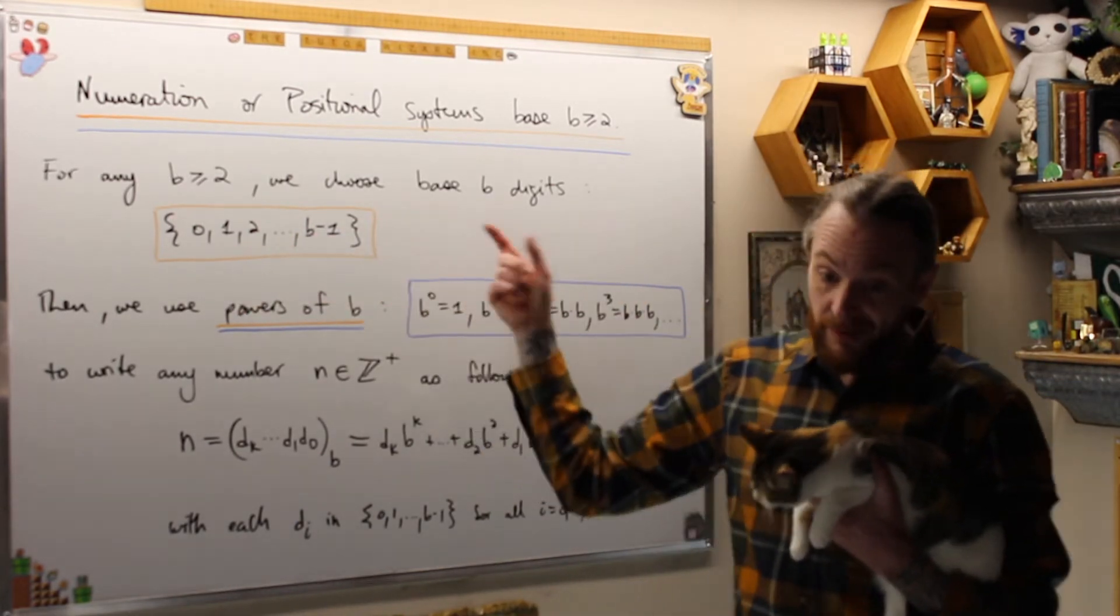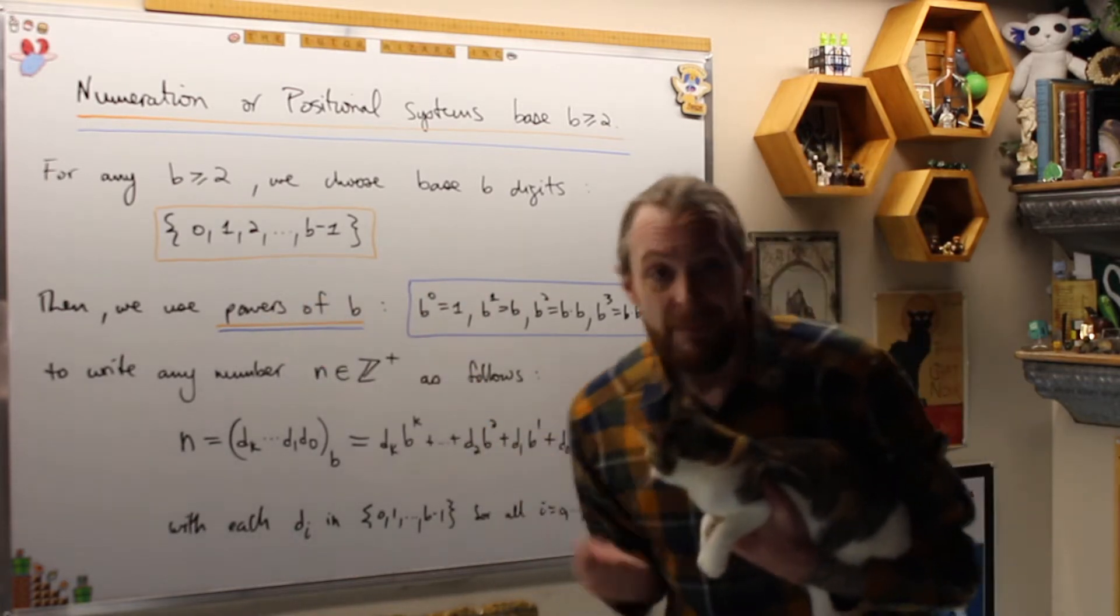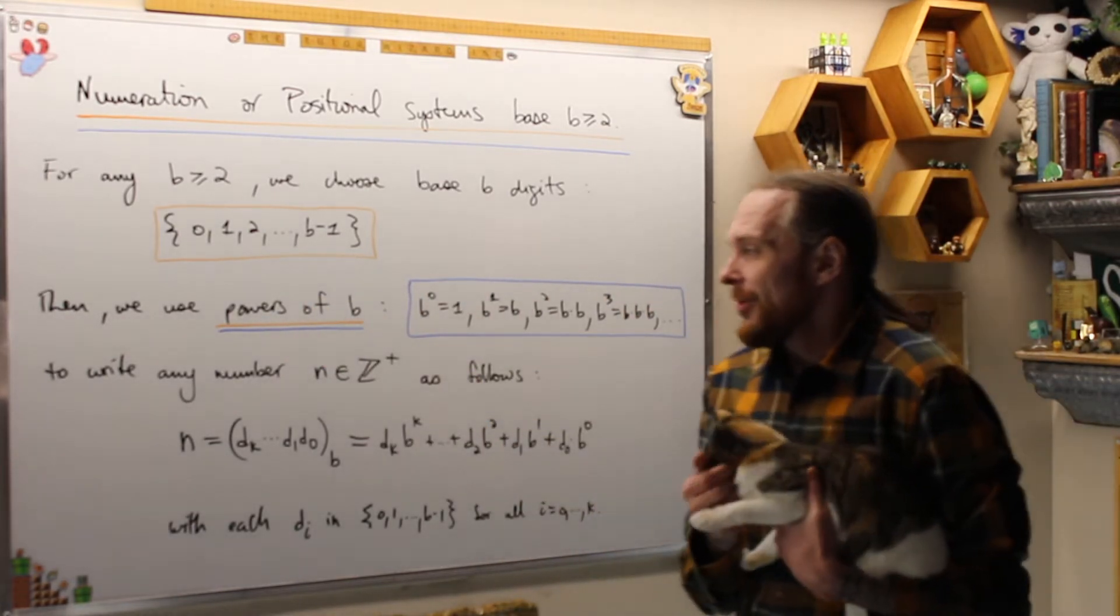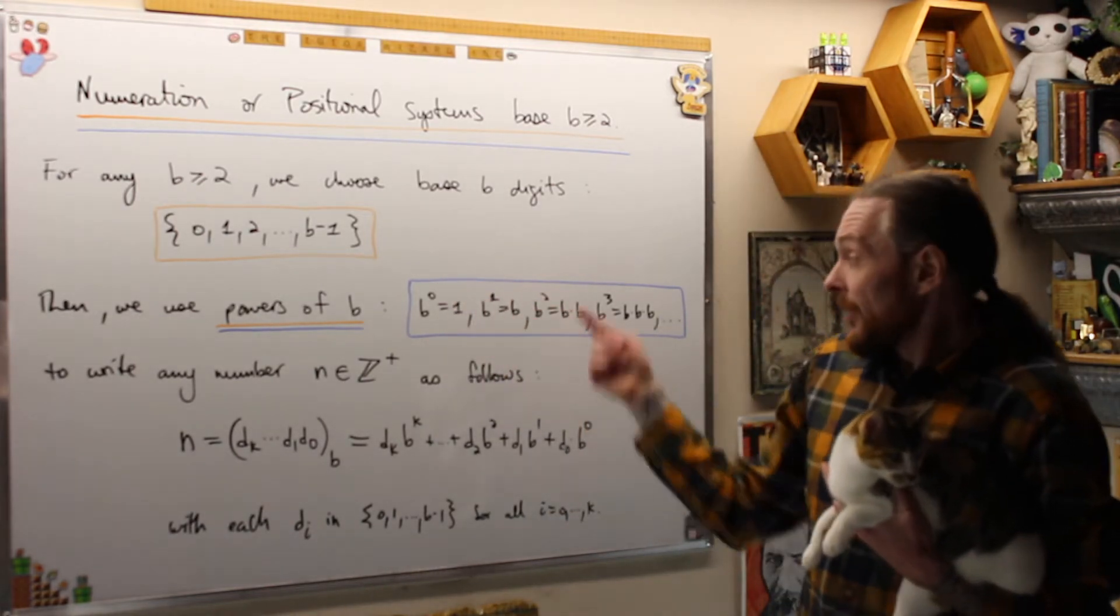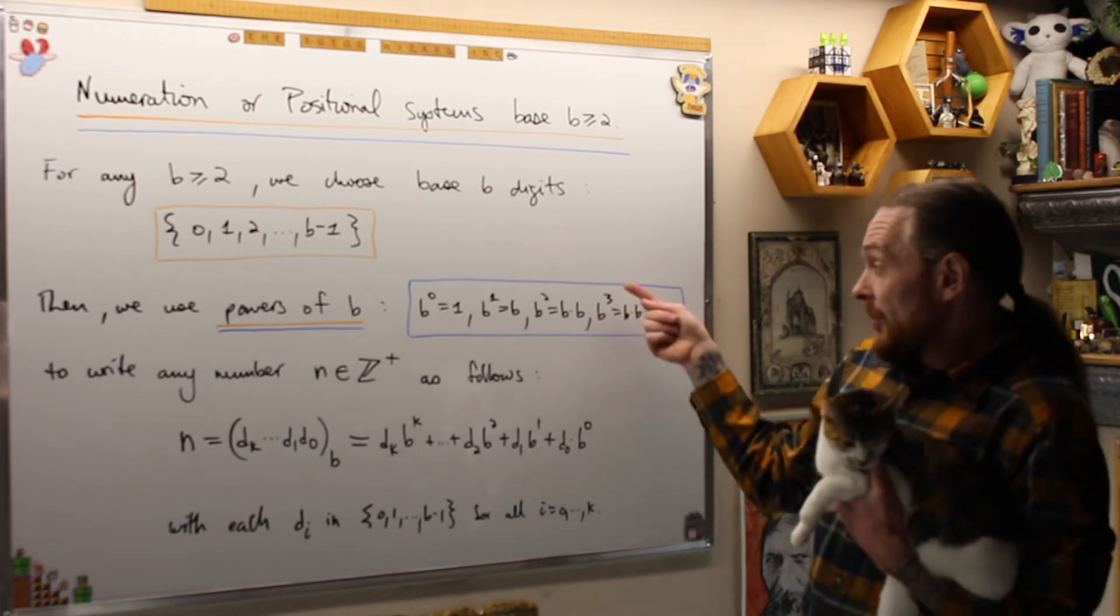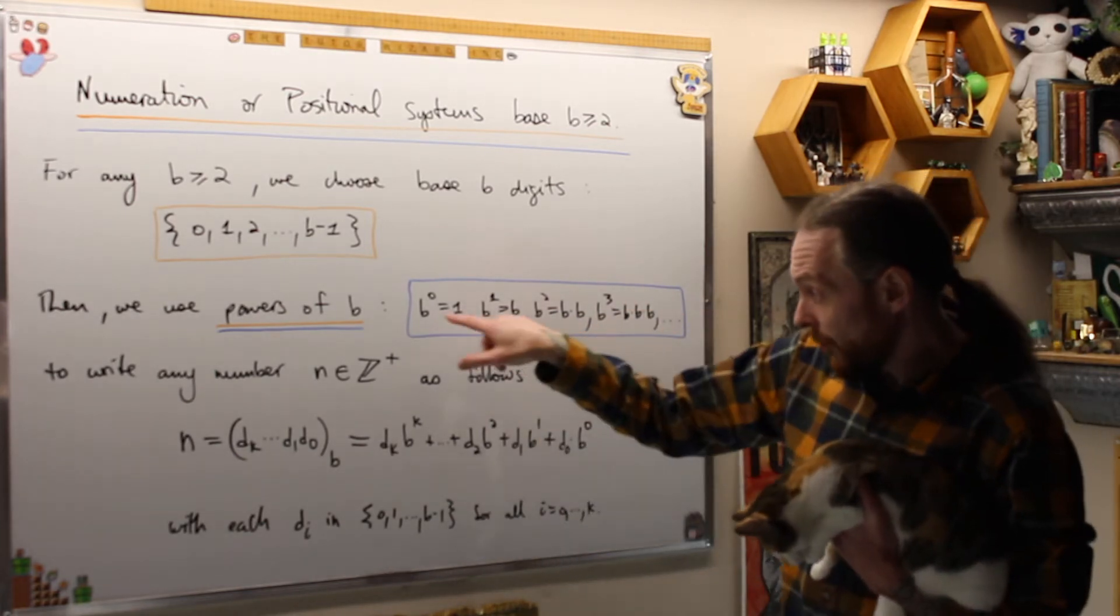We're going to pick 0 as a placeholder, which is the epiphany, and then digits from 1 to B minus 1. So if you pick 7, it'll be 0, 1, 2, 3, 4, 5, 6 because 6 is 7 minus 1. Then we're going to use powers of base B, which are B to the 0 is 1, B to the 1 is B, B squared is B times B, B cubed is B times B times B.